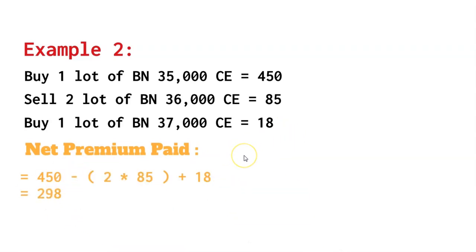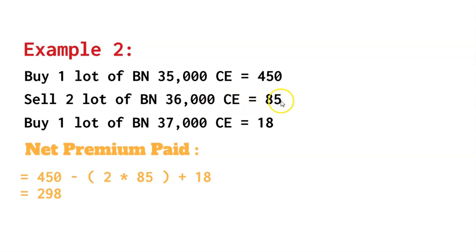The net premium here is 450 minus two times 85, plus 18, which works out to 298 points — almost 90 points lesser cost as a buyer. The max loss is also reduced significantly. However, the profits are also reduced because the max profit you can make is 450 becoming 1,000, then two times 85 equals 170 points minus 70, plus 150 points. The max profit is around 600 points per lot, reducing total profit potential to around 15,000 rupees.